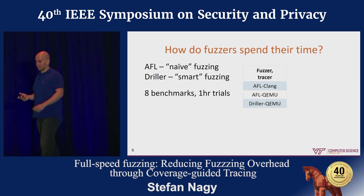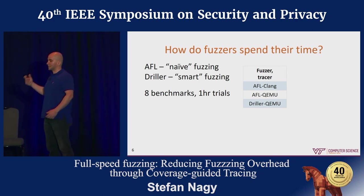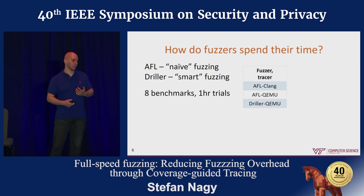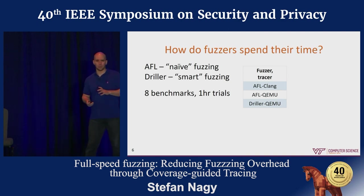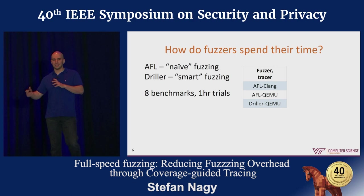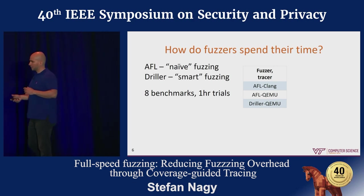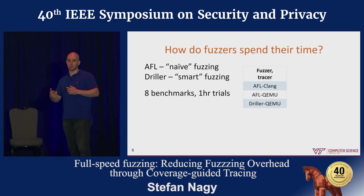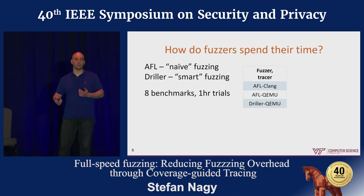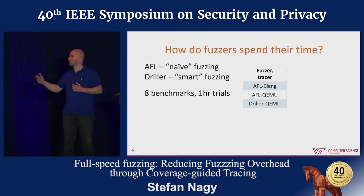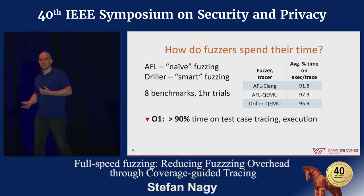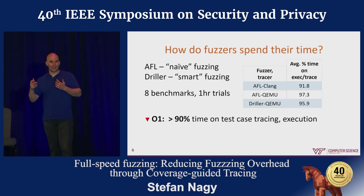We wanted to identify how fuzzers actually spend their time while trying to find bugs in an application. So we profiled AFL, which is the standard naive-based fuzzing approach, as well as Driller, which complements naive fuzzing techniques with a more technical symbolic execution approach. We looked at black-box QEMU-based tracing for both AFL and Driller, as well as Clang's out-of-the-box assembly-time white-box tracing approach. We profiled one-hour executions for eight benchmarks per configuration, and discovered that across every one of these configurations, over 90% of fuzzer time was spent on tracing and executing test cases.